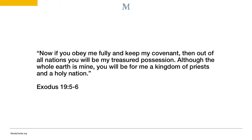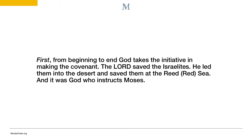There are four introductory factors to understand about the law. First, from beginning to end, God takes the initiative in making the covenant. Mankind had no role — it was God alone who reaches out. The Lord saved the Israelites, led them into the desert, and saved them at the Sea of Reeds. And it was God who instructs Moses.